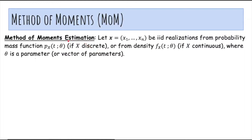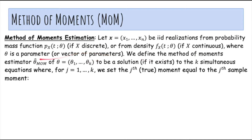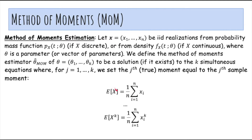Now let's introduce the method of moments. If x is a set of iid realizations from probability mass function px or density fx, and theta is a parameter or vector of parameters, then the method of moments estimator, theta hat MOM, is a solution — if it exists — to k simultaneous equations where, for any j from 1 through k, we set the jth true moment equal to the jth sample moment. So the kth true moment, which is the expected value of x to the kth power, should equal the kth sample moment, which is the average value of xi to the kth power over our samples.